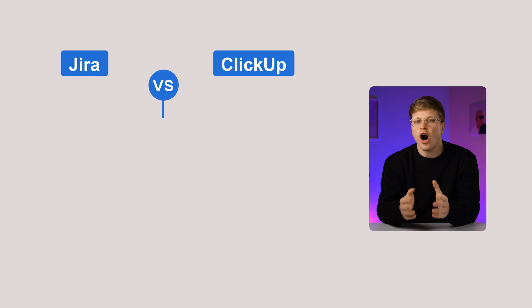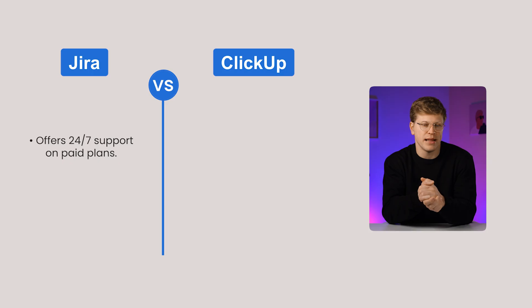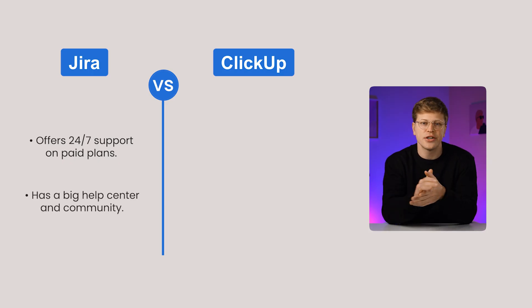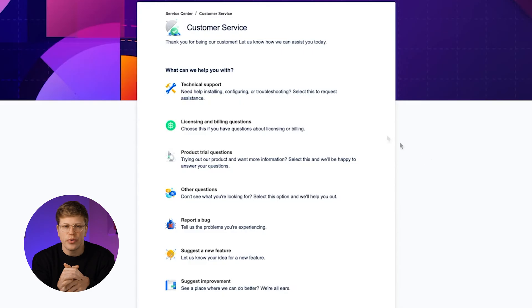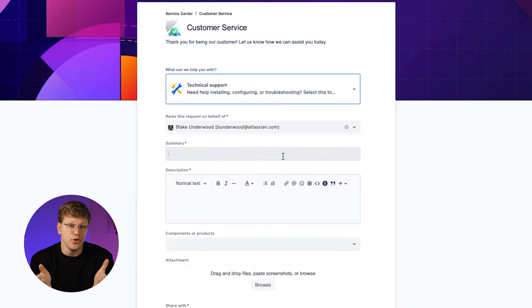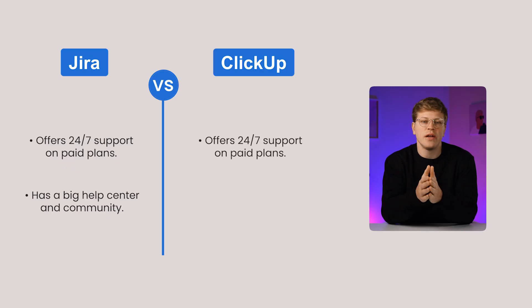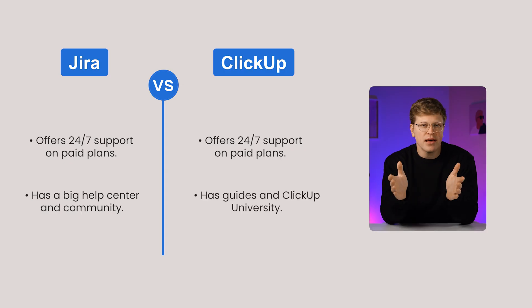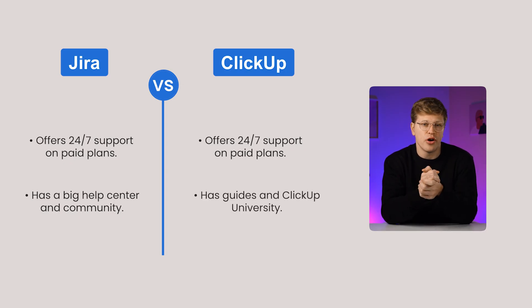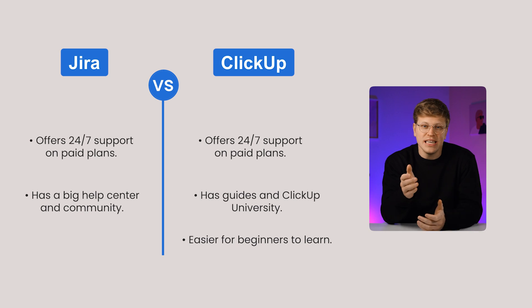Support and reliability. JIRA offers 24/7 support on paid plans, a large online help center, and an active community where you can get answers from other users. Some advanced training courses cost extra. ClickUp also has 24/7 support, plus a big library of free guides, videos, and templates to help you get started. ClickUp University makes learning easier for beginners. Verdict: both give strong support, but ClickUp is more beginner-friendly thanks to its free learning resources.